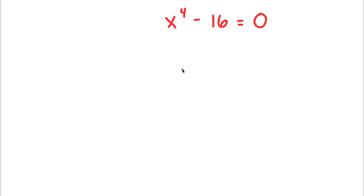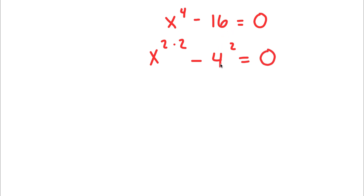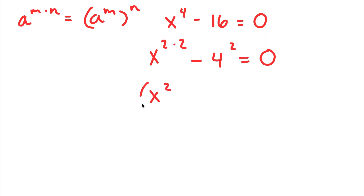In this problem, I have x to the power of 4 minus 16 is equal to 0. To solve this, I'm going to first rewrite x to the power of 4 as x to the power of 2 times 2, and rewrite 16 as 4 to the power of 2. Now, using the rule that a to the power of m times n equals a to the power of m to the power of n, x to the power of 2 times 2 becomes x to the power of 2 to the power of 2. So I have x squared all squared minus 4 squared is equal to 0.